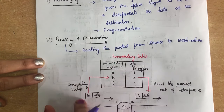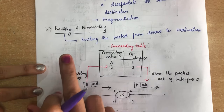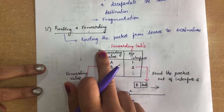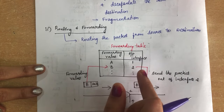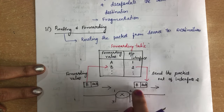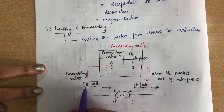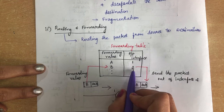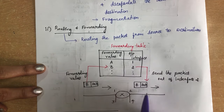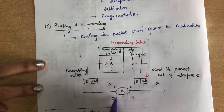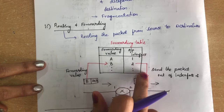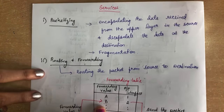The third service is forwarding. Whenever a packet arrives at a router, the router maintains a forwarding table — a decision-making table — to determine which output interface or port to send the packet through. For example, if the destination is B, the router checks the forwarding table and finds that the packet should be sent through output interface 2. Even though the router has interfaces 1, 2, 3, and 4, it sends the packet only through interface 2. This is how the forwarding table works.